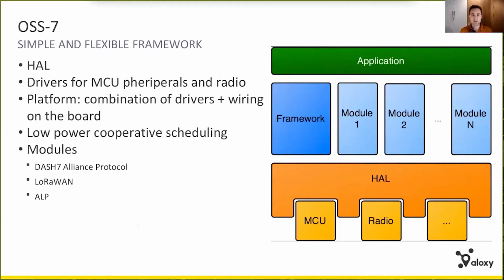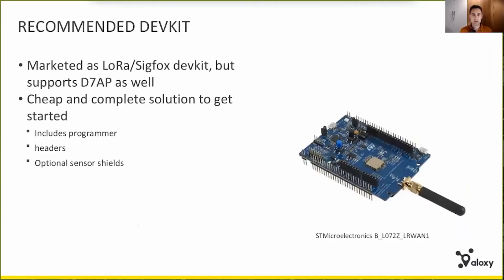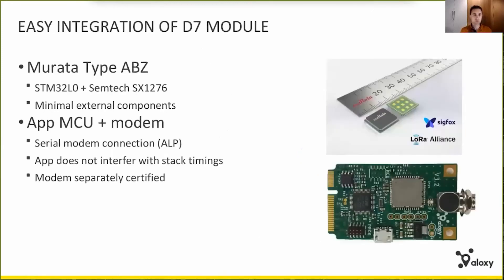Next to Dash 7, it also has LoRaWAN currently. There's a cheap off-the-shelf DevKit available from STMicroelectronics which contains everything to get started. But you can also use a modem sold by Murata — if you load the open source stack on this, you can easily embed it as an external serial modem. The PCB shown is this modem integrated on the chip we use in our gateway.